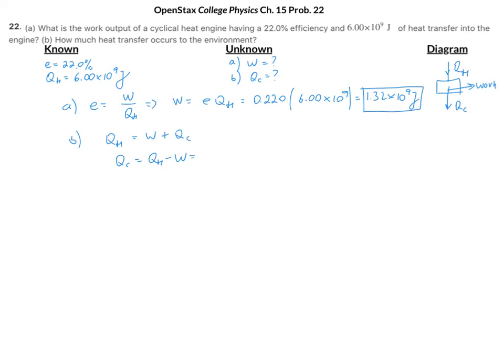Q_H was 6.00 times 10 to the 9th joules, minus 1.32 times 10 to the 9th. And when we subtract the two, we end up with 4.68 times 10 to the 9th joules.